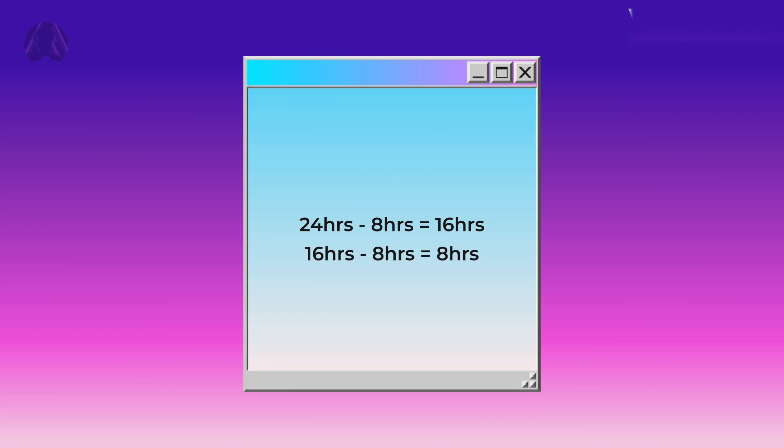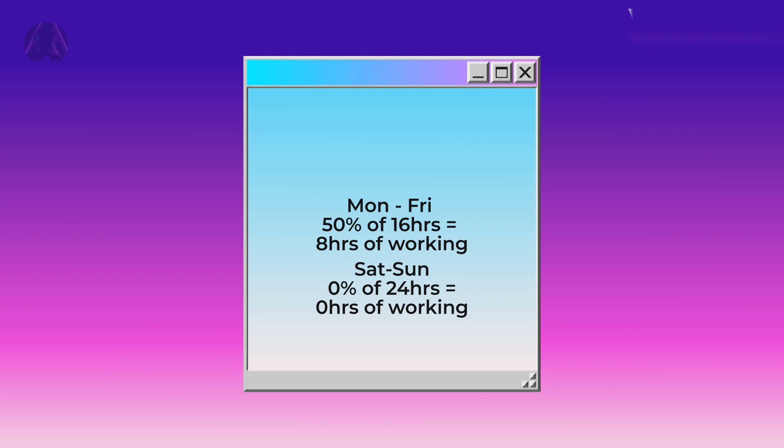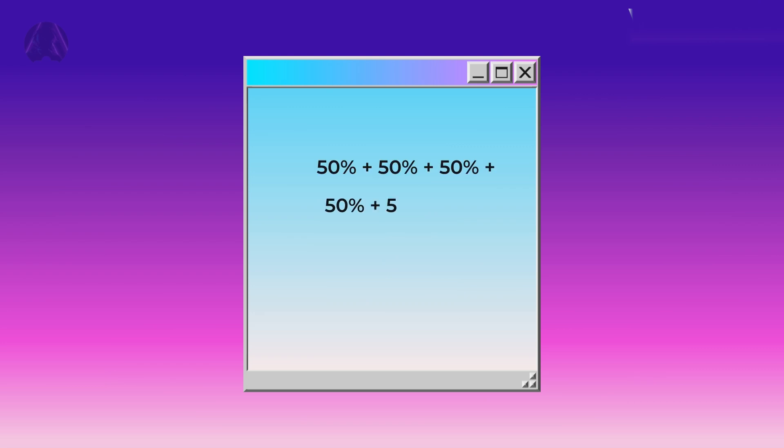8 hours of 16 is 50%. So, Monday through Friday, 50% of one's time goes to working. While Saturday and Sunday, 0% of that time goes towards working. Now, by finding the average of the percentages throughout the week, we come to a conclusion of 36%,